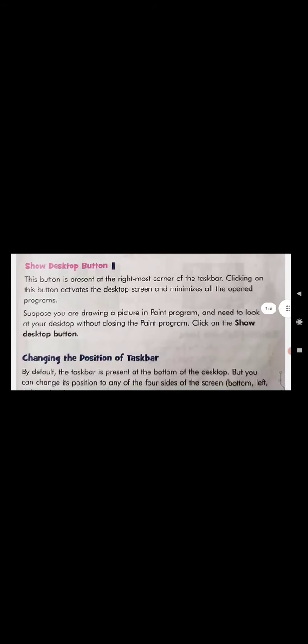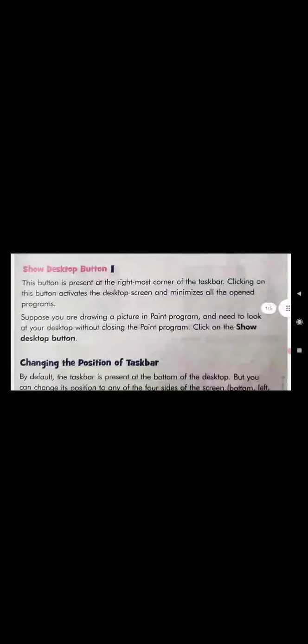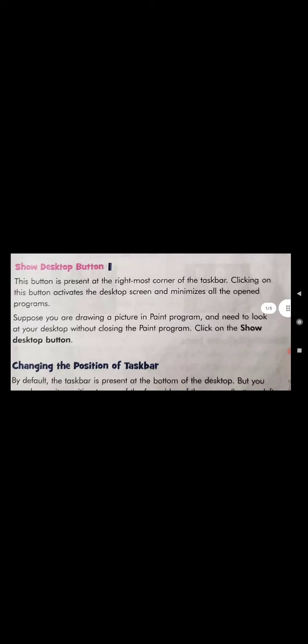Next is the Show Desktop button. The Show Desktop button is present at the right-most corner of the taskbar. Clicking on this button activates the desktop screen.